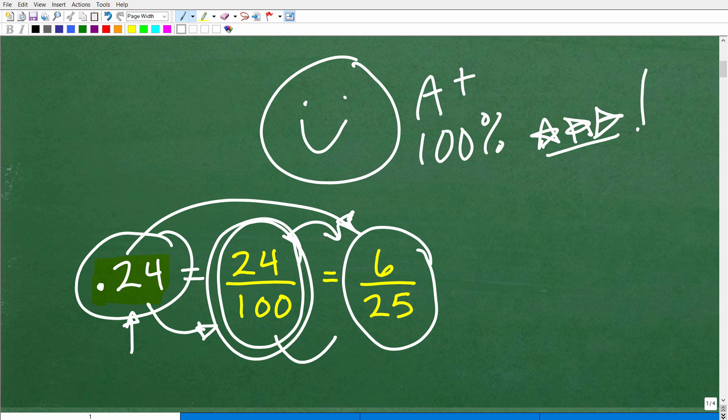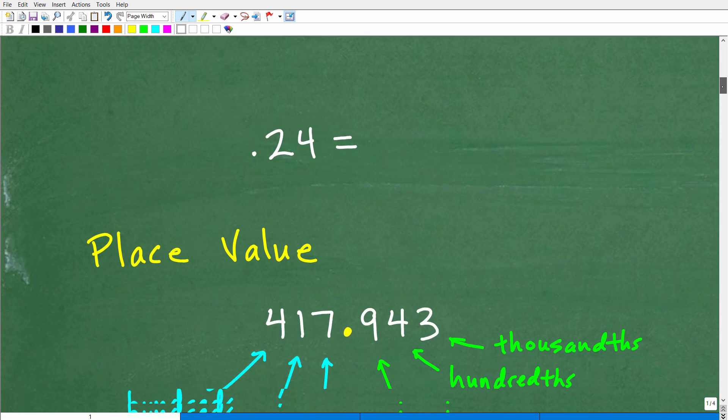Okay, so let's go ahead and get into exactly how we convert a decimal into a fraction. By the way, 0.24, again, just to stress this, when you write this decimal as a fraction, we're going to first take 0.24 and write it as the fraction 24 over 100.